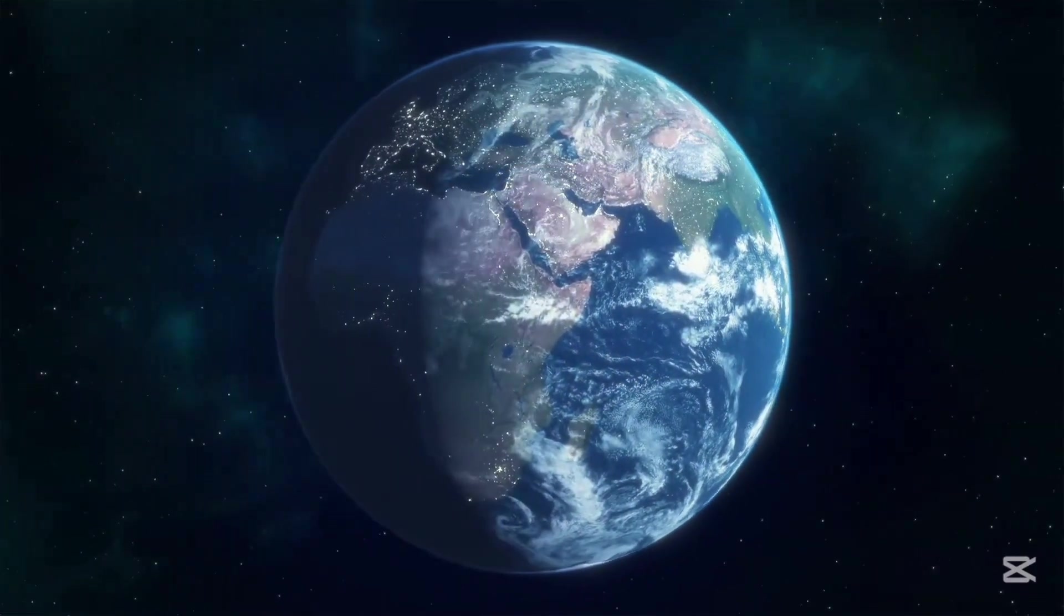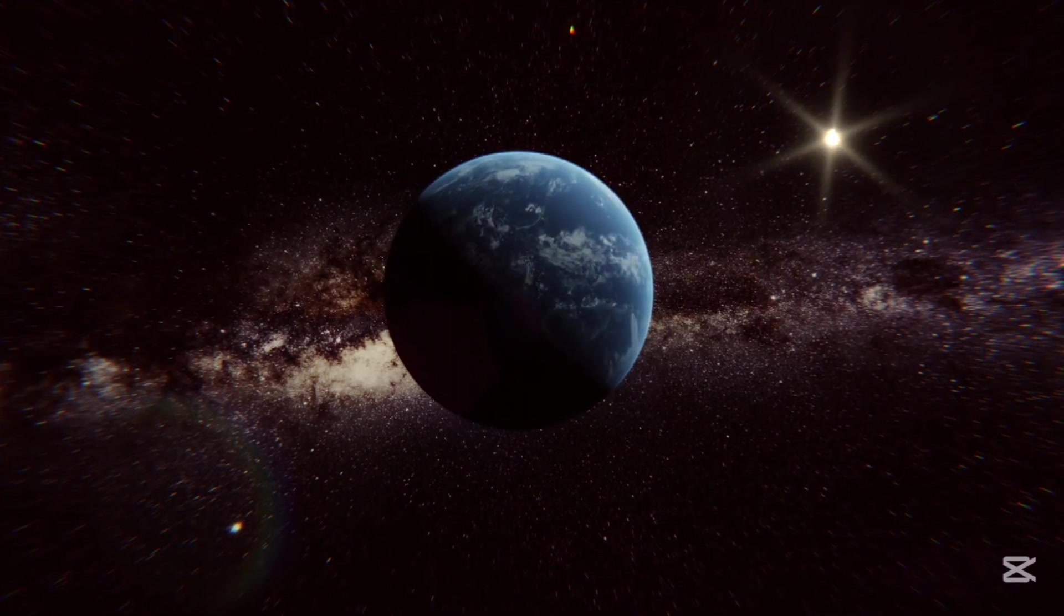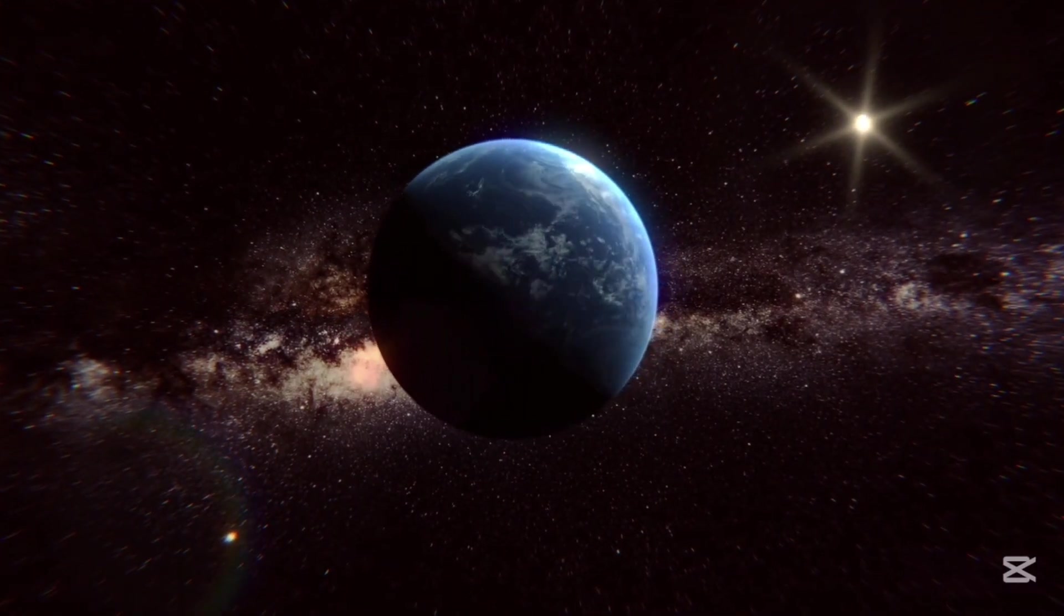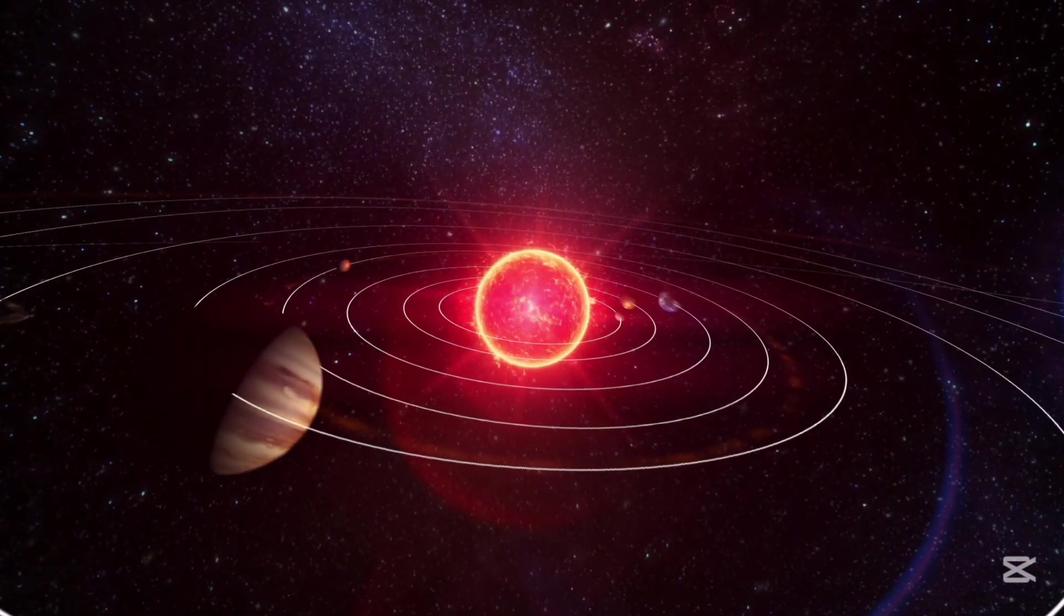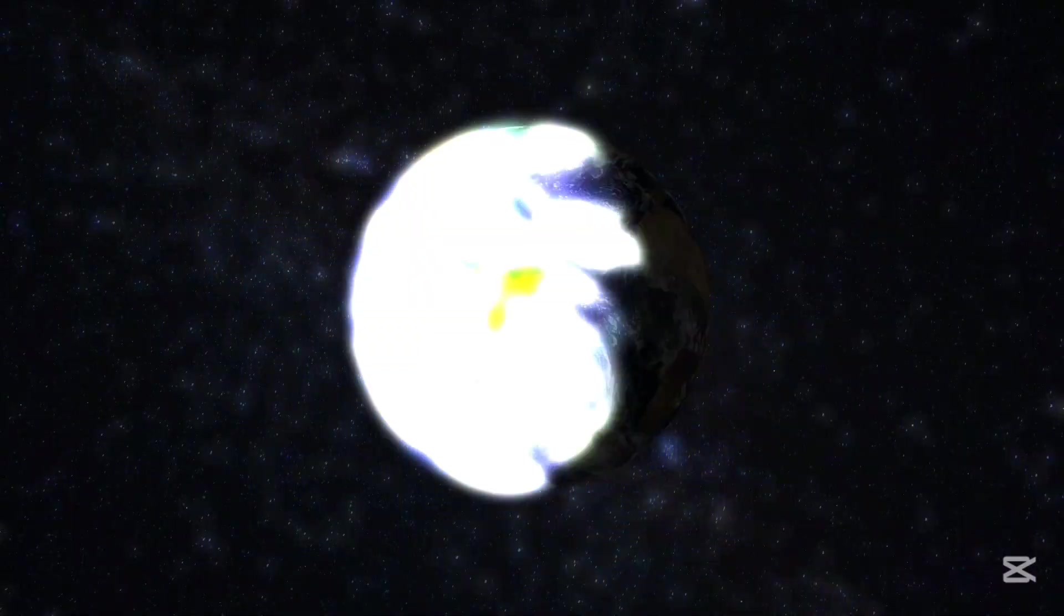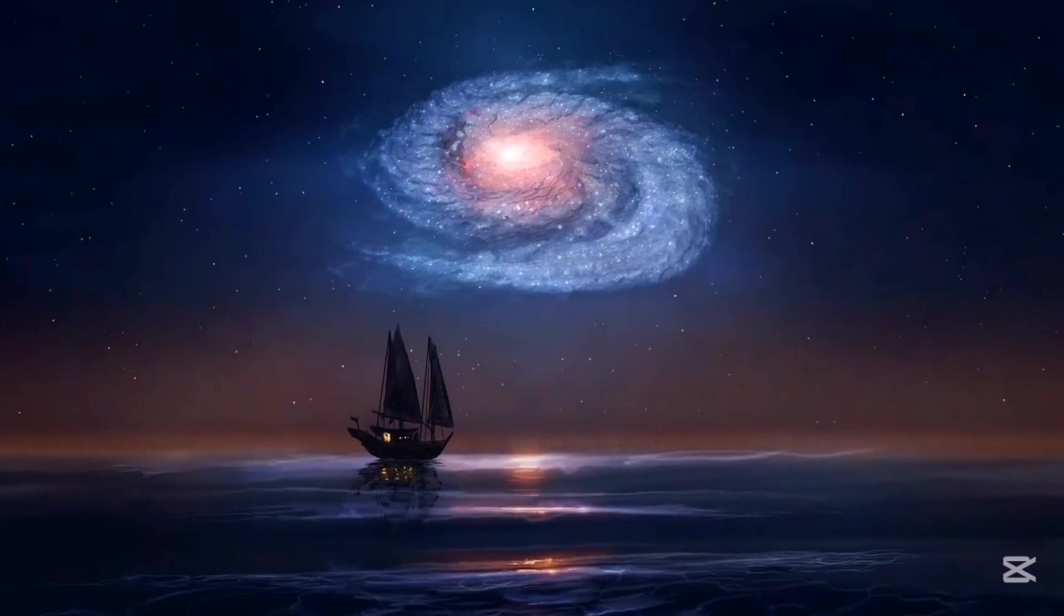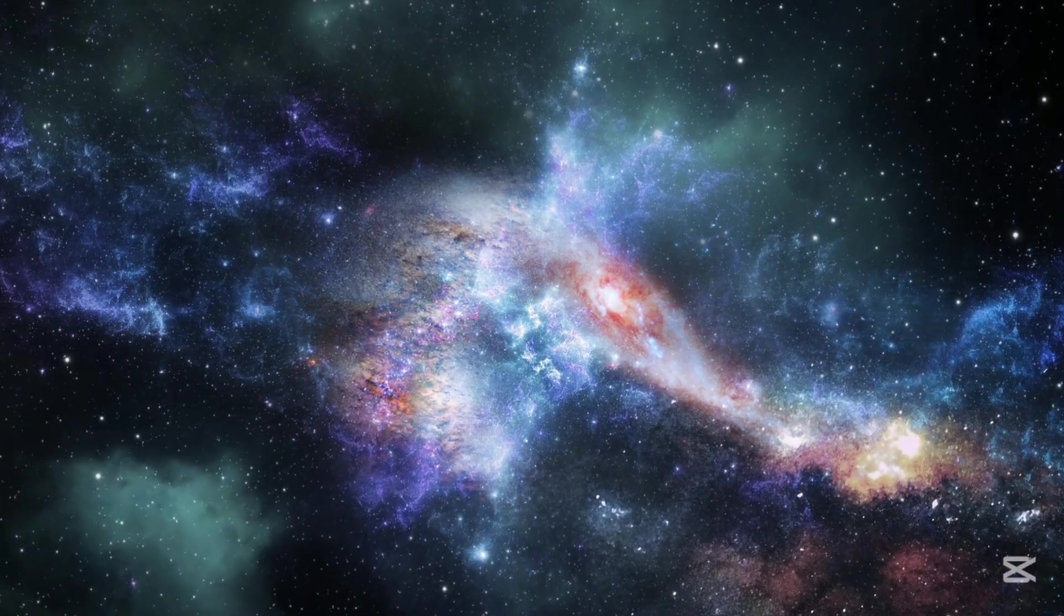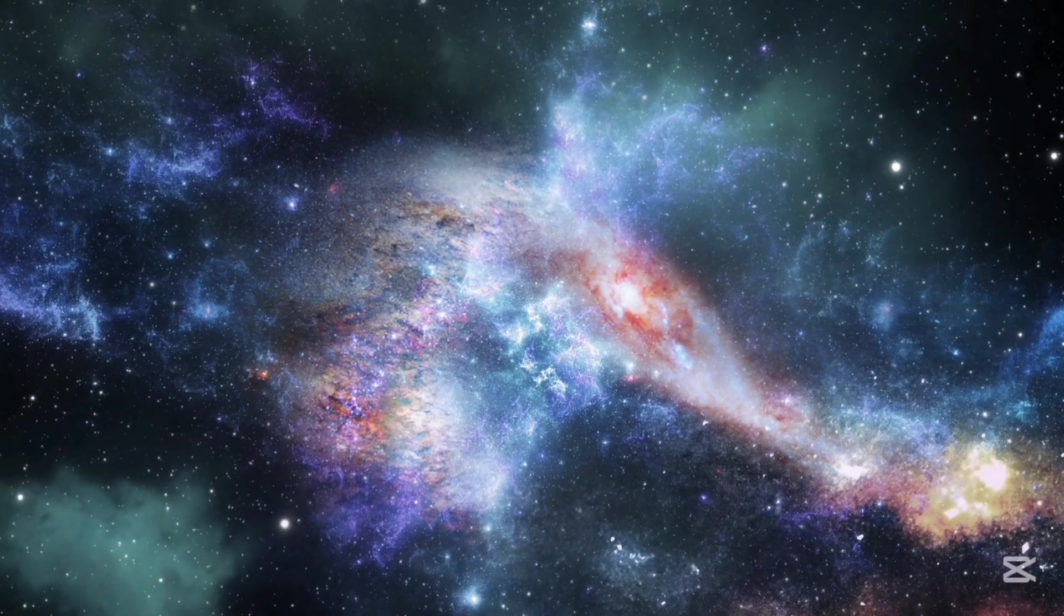But what about Earth? Will we survive the chaos? Hold that thought. What happens to Earth when the Milky Way and Andromeda collide? The good news? Our solar system is far enough from the galactic center that it probably won't be swallowed up in the initial chaos. In fact, Earth might get a front row seat to one of the most spectacular light shows in the universe. Imagine the sky filled with shimmering stars, glowing gas clouds, and the merging of two galactic cores.